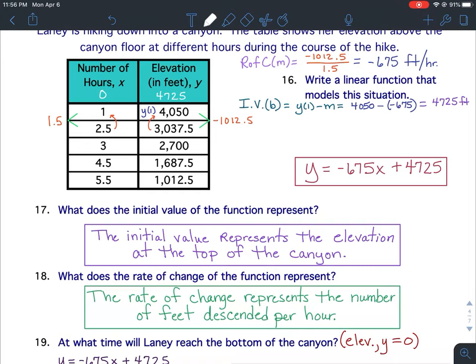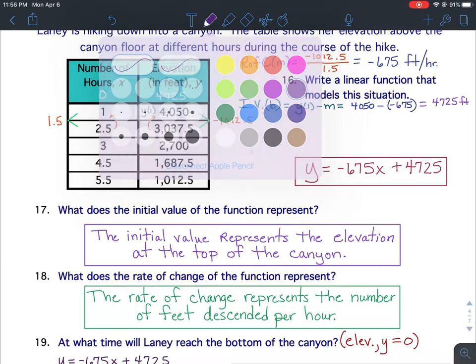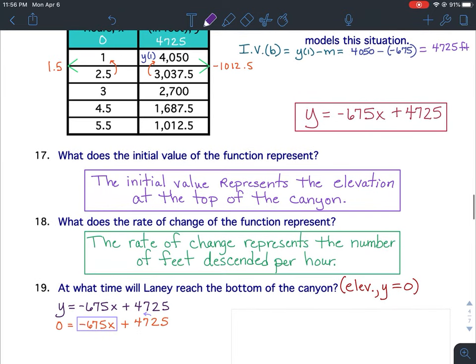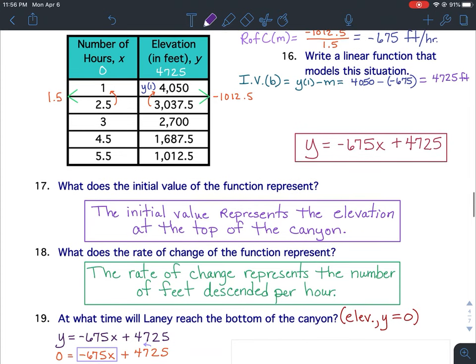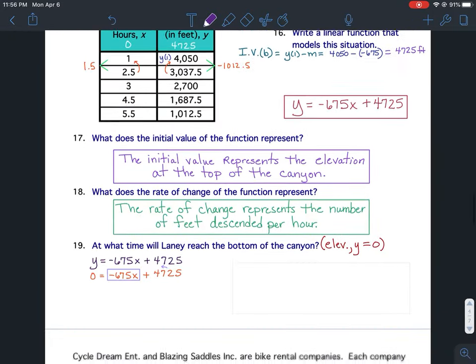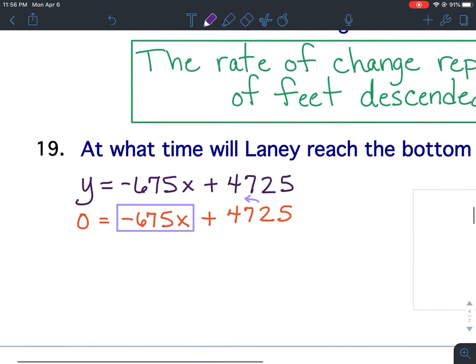Okay. Question 19. Question 19 says, at what time will Laney reach the bottom of the canyon? If she is at the bottom of the canyon, she's on the canyon floor, that means her elevation is zero. Her elevation is zero, and the y value would be zero. So what I did was I took the equation that we got in question 16, and I wrote it down here for question 19, and I plugged the zero in for y because her elevation, which is the y value, is zero. And now I'm solving this two-step equation.